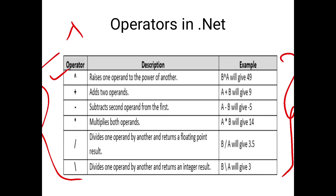A plus B, which is 7 plus 2, will give us 9. For the minus operator, it subtracts the second operand from the first. So A minus B is 2 minus 7, which gives us minus 5.